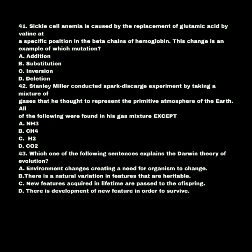Which one of the following sentences explains Darwin's theory of evolution? A. Environment changes creating a need for organisms to change. B. There is a natural variation in features that are heritable. C. New features acquired in the lifetime are passed to the offspring. D. The development of new features in order to survive. Our answer is B: there is a natural variation in features that are heritable.